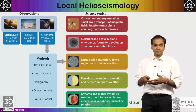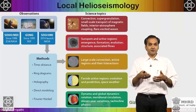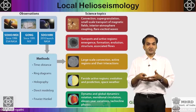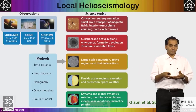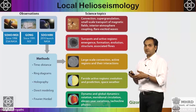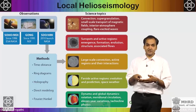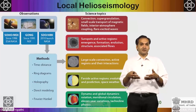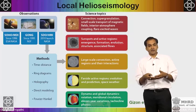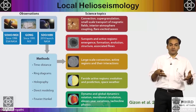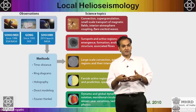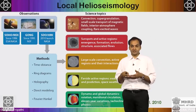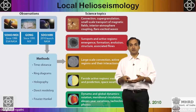In summary, the solar interior can be probed using neutrinos — confirming the standard solar model — and using helioseismology, which verifies the various physical processes predicted by the standard solar model. Together, these techniques have greatly advanced our understanding of the solar interior. Thank you very much.